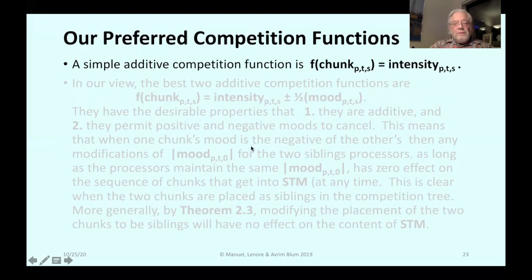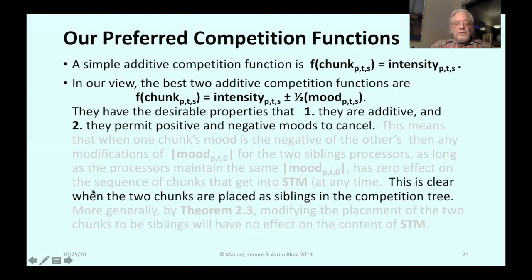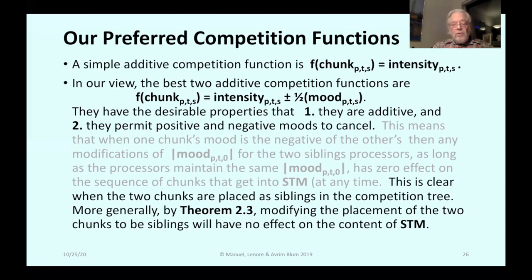Our preferred competition functions: a simple additive competition function is f(chunk) = intensity. The best two additive competition functions are f(chunk) = intensity + 1/2 * mood and f(chunk) = intensity − 1/2 * mood. One takes a more positive view of life, the other a more negative view; both have the desirable properties of being additive and permitting positive and negative moods to cancel. By theorem 2.3, modifying the placement of two chunks anywhere as siblings has no effect on the content of short-term memory.